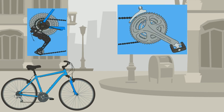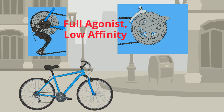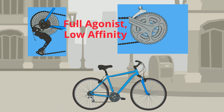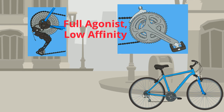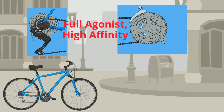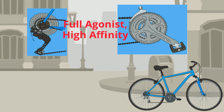A useful analogy is to compare a drug's effect to that of a bicycle driven by a pedal and chain with various gears. Because receptor binding is driven by the concentration of the drug, a full agonist with low affinity for the receptor would be acting as if things were set to the lowest gear — the bike gets to the end of the street, but it takes three turns of the pedal. A higher affinity full agonist makes it to the end of the street in only one turn of the pedal, as if it were in a higher gear.